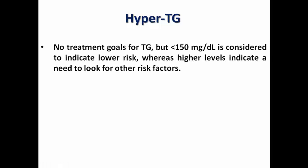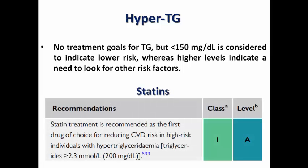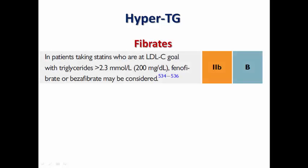What about a patient with hypertriglyceridemia rather than hypercholesterolemia? There are no treatment goals for triglycerides so far, but less than 150 mg/dL indicates lower risk. Higher levels may indicate a need to look for other cardiovascular risk factors. Statins are the first choice for treating hypertriglyceridemia when the level is more than 200 mg/dL. Despite what you might think, statins remain the evidence-based medication — fibrates are class 2B.